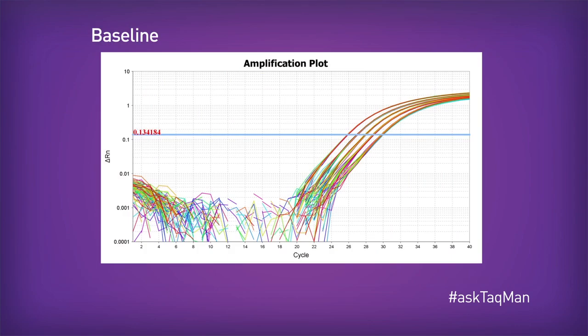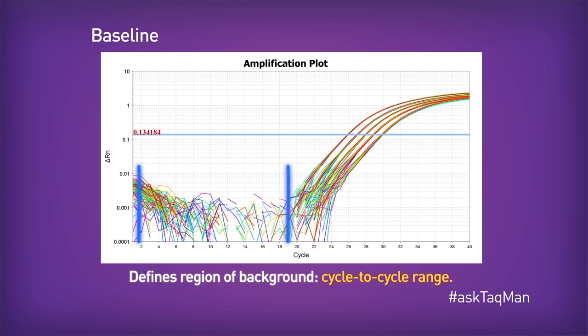So we can just ignore it, right? No. Here's the thing — this noise does have an effect on our curves. Our job is to minimize that effect by effectively subtracting out the noise. We do that by establishing what's known as a baseline: a cycle-to-cycle range over which only noise can be seen prior to the appearance of curves. Once established, the software will effectively subtract out the noise on a well-by-well basis, greatly improving the quality of our data.